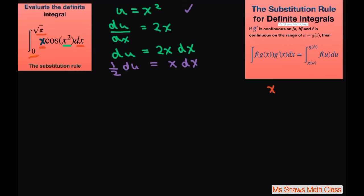So if x equals 0, so from here, if I put an x in there, u is still going to be 0. If x is square root of pi, you plug in pi, square root of pi squared, you're just going to get u equals pi. So now I can change my integral from 0 to pi.